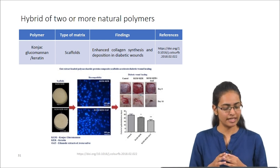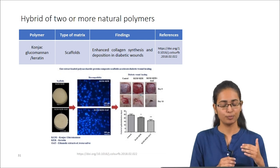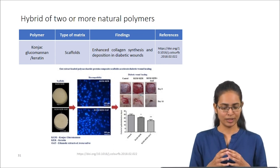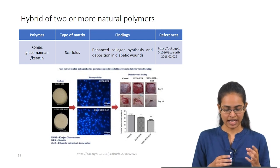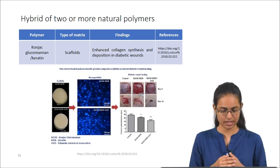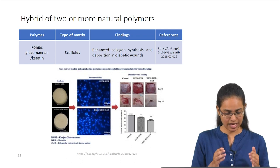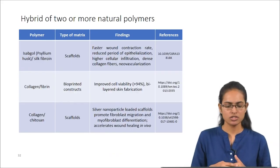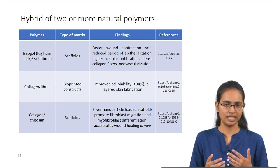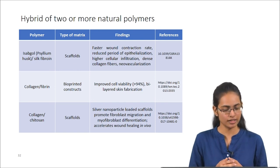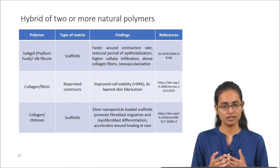Konjac glucomannan-keratin scaffolds have also been developed — konjac glucomannan is a polysaccharide-based polymer and keratin is a protein-based polymer. An in vivo study showed enhanced collagen synthesis and deposition in diabetic wounds, and the scaffolds were highly biocompatible. Other blended natural polymers include isabgol-silk fibroin, collagen-fibrin bioprinted constructs, and collagen-chitosan scaffolds, all demonstrating superior properties as skin tissue engineering products.